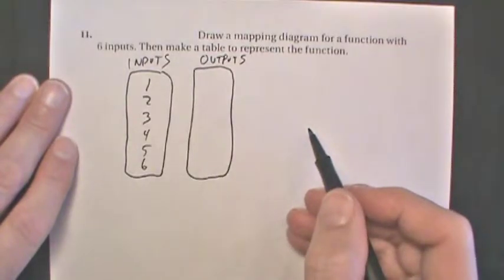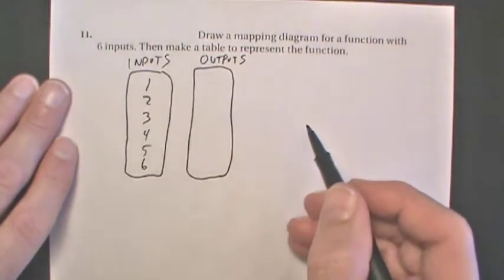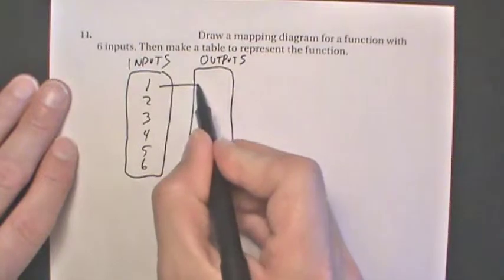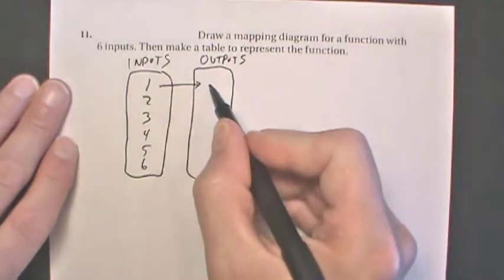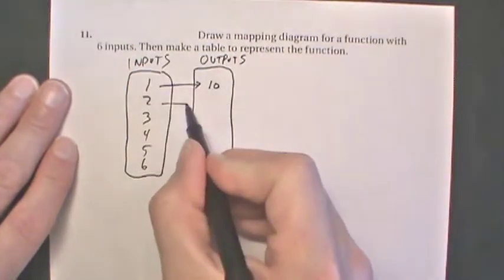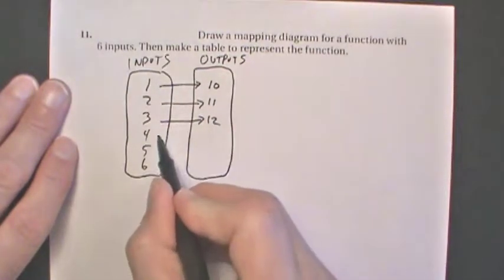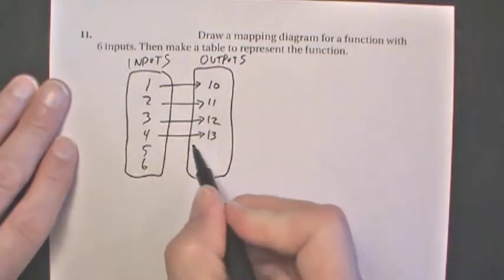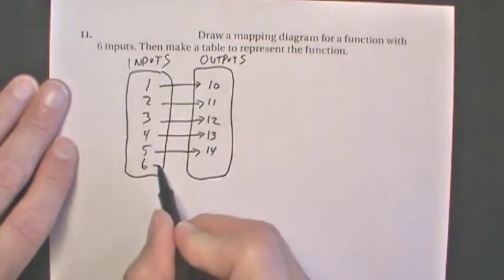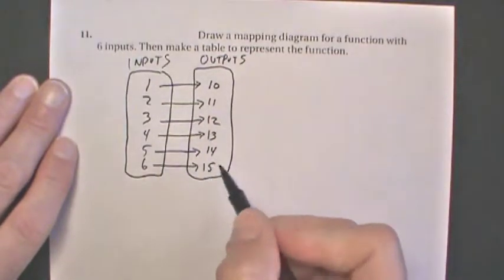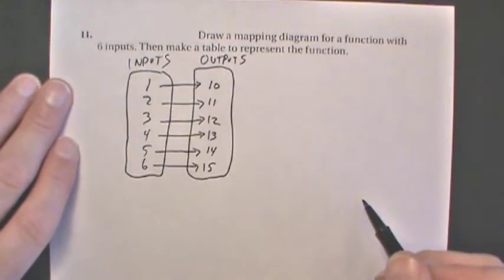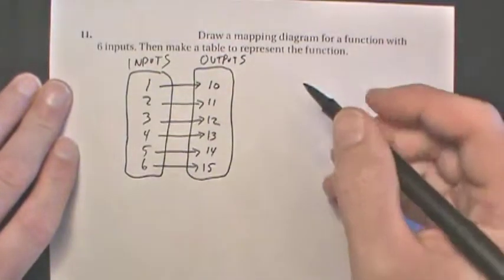For outputs, we're going to map them to some more numbers that we're going to make up: 10, 11, 12, 13, 14, 15. Then we're going to make a table to represent this.